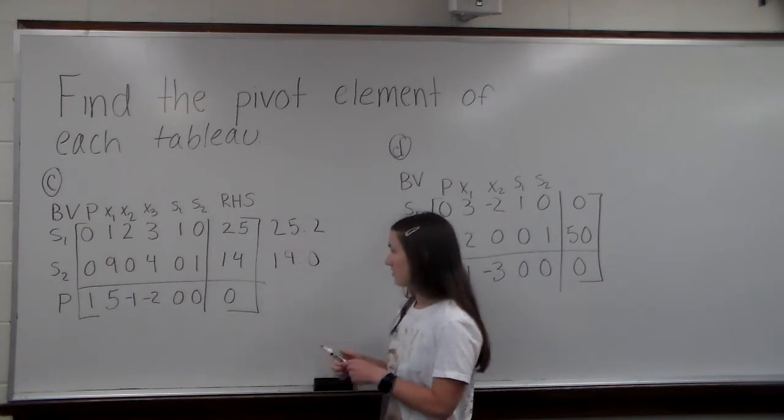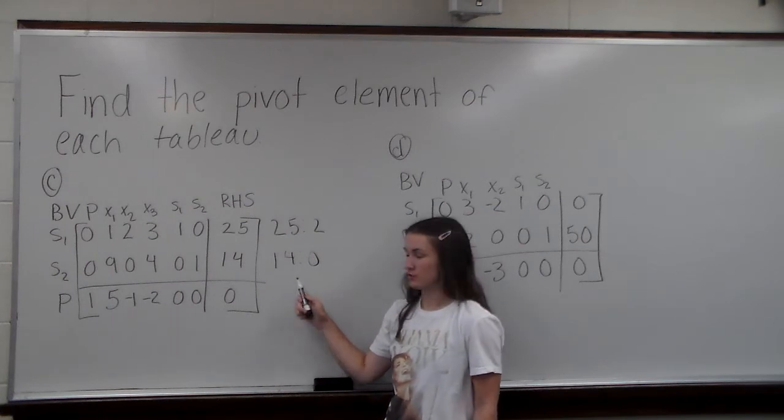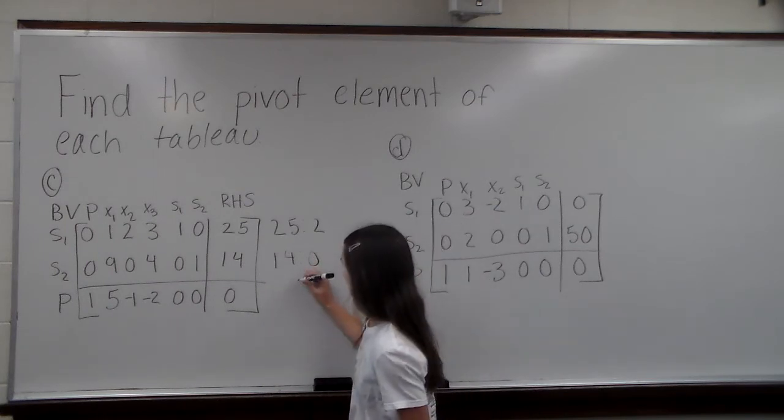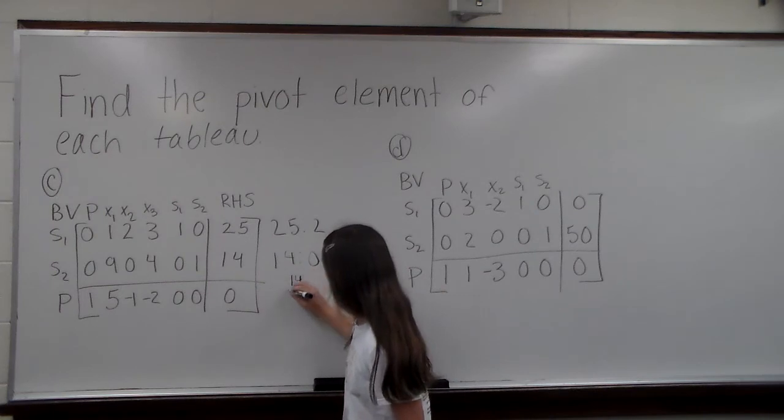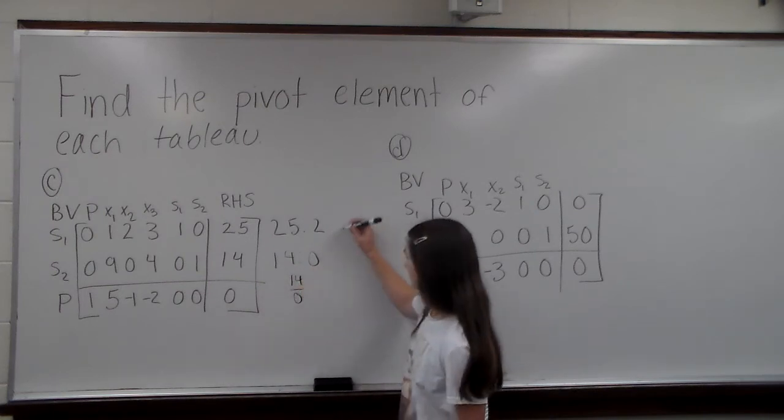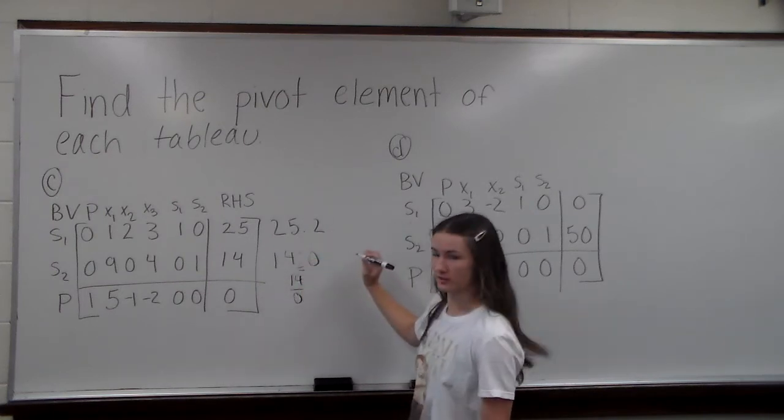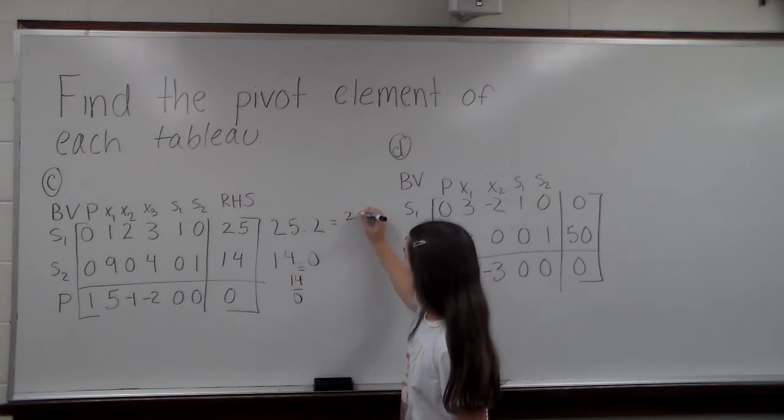And when we do that, we can see that 14 to 0, we can also think of this as a fraction. So we would have 14 over 0, put an equal sign there, and then 25 over 2.